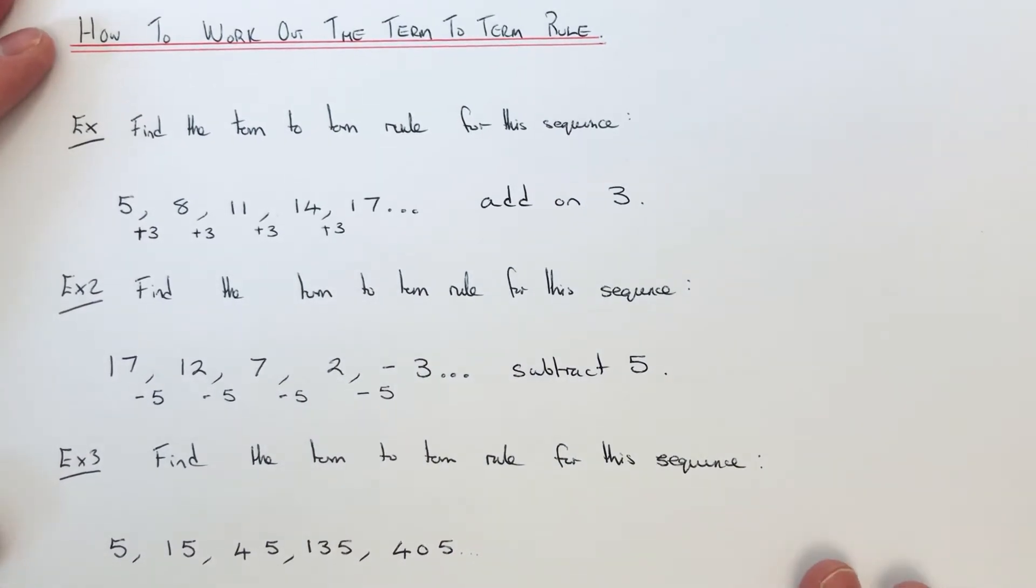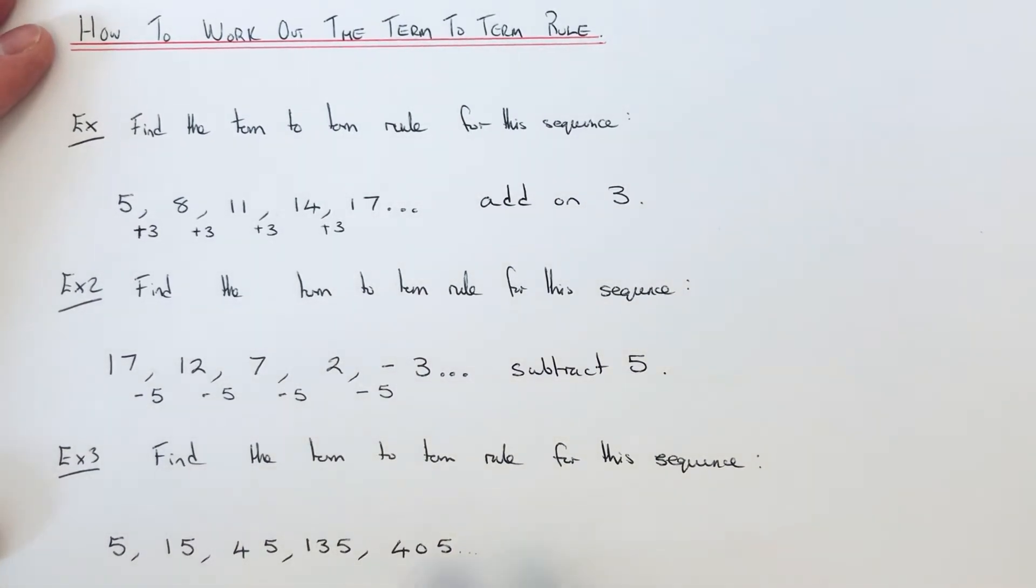So let's have a look at our final example then. So the final one is a little bit harder. So we've got to find the term to term rule for this sequence. We've got 5, 15, 45, 135 and 405. OK.